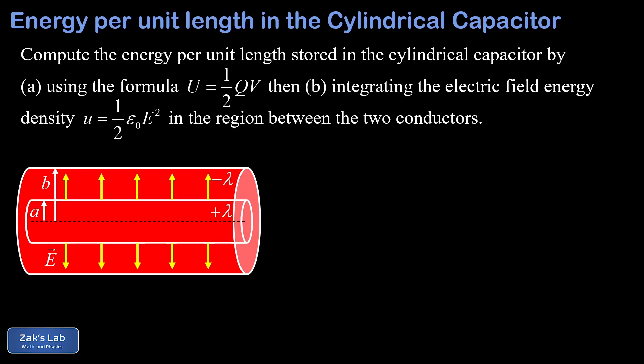To briefly review, the cylindrical capacitor consists of two coaxial conducting cylinders separated by vacuum, and we have a linear charge density of plus lambda on the inner cylinder, that's the one with radius a, and negative lambda on the outer cylinder, that's the one with radius b.